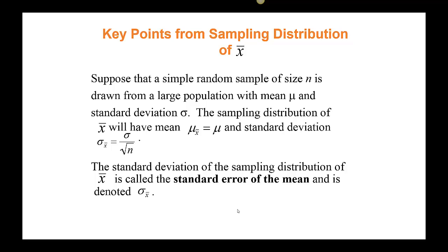Suppose that a simple random sample of size n is drawn from a large population with a mean of mu and a standard deviation of sigma. The sampling distribution of X-bar: when we take the mean of all the sample means, we call that mu of X-bar, and it will be approximately equal to the population mean. The standard deviation will be different because the distribution is less dispersed. We call it sigma X-bar, and the formula is sigma divided by the square root of n. This is called the standard error of the mean, denoted sigma X-bar.